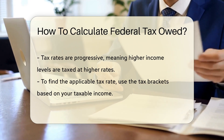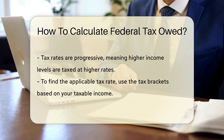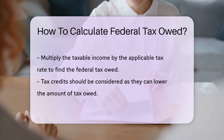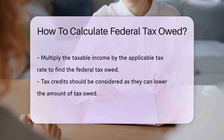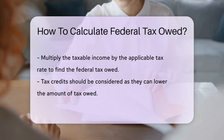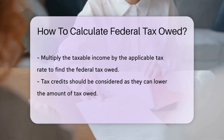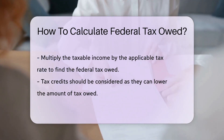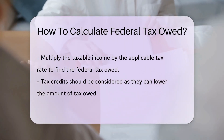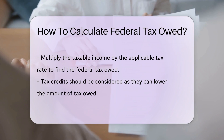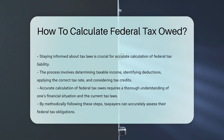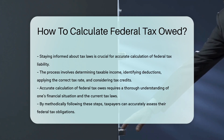After determining taxable income and deductions, you can use the tax brackets to find the applicable tax rate. Multiply your taxable income by the tax rate to calculate the federal tax owed. Remember to consider any tax credits you may qualify for, as they can reduce the final amount owed.